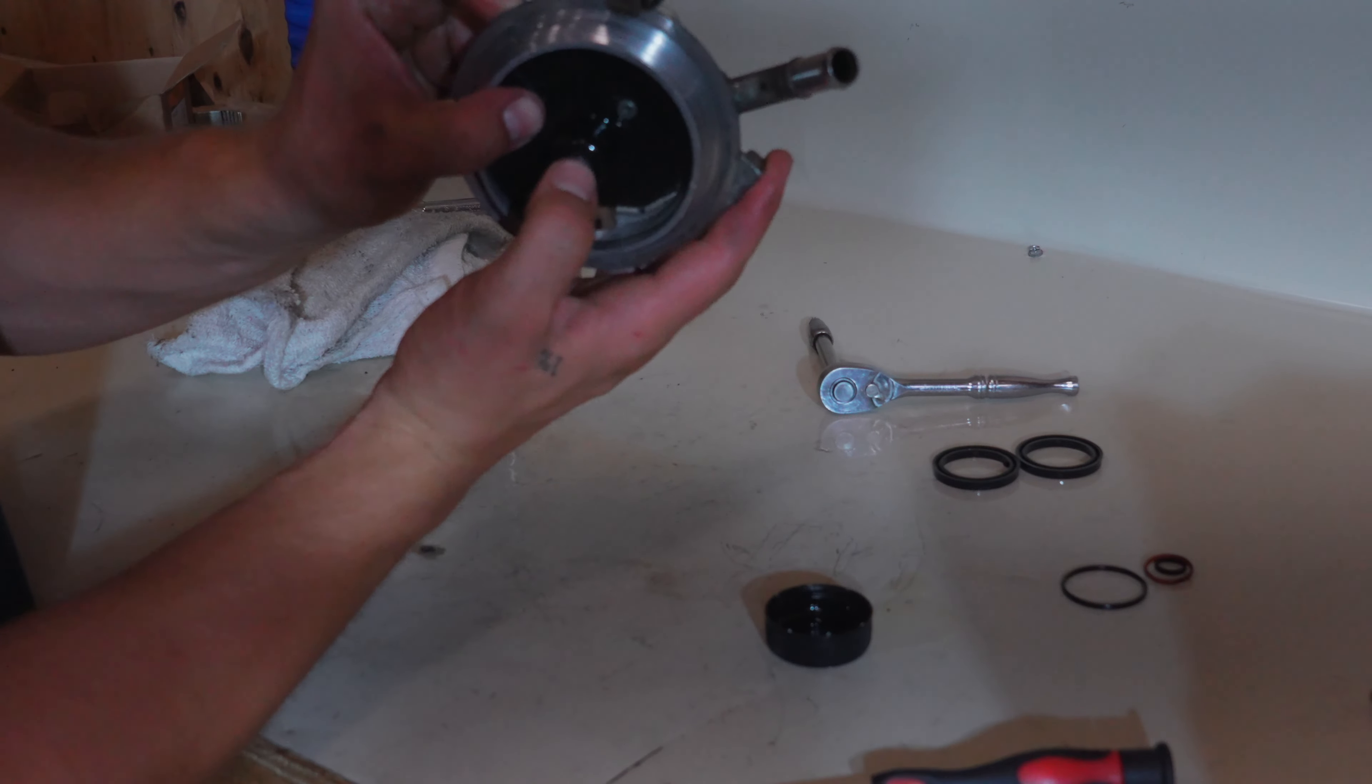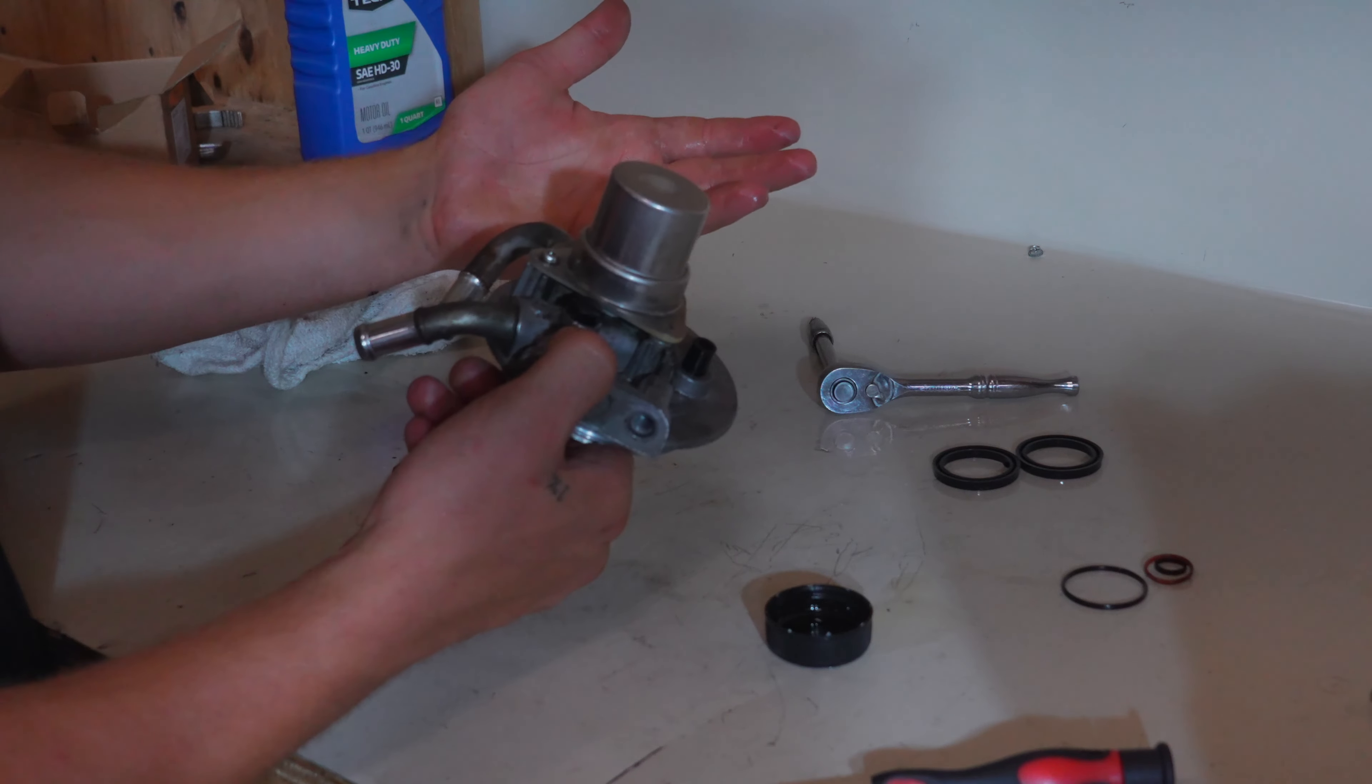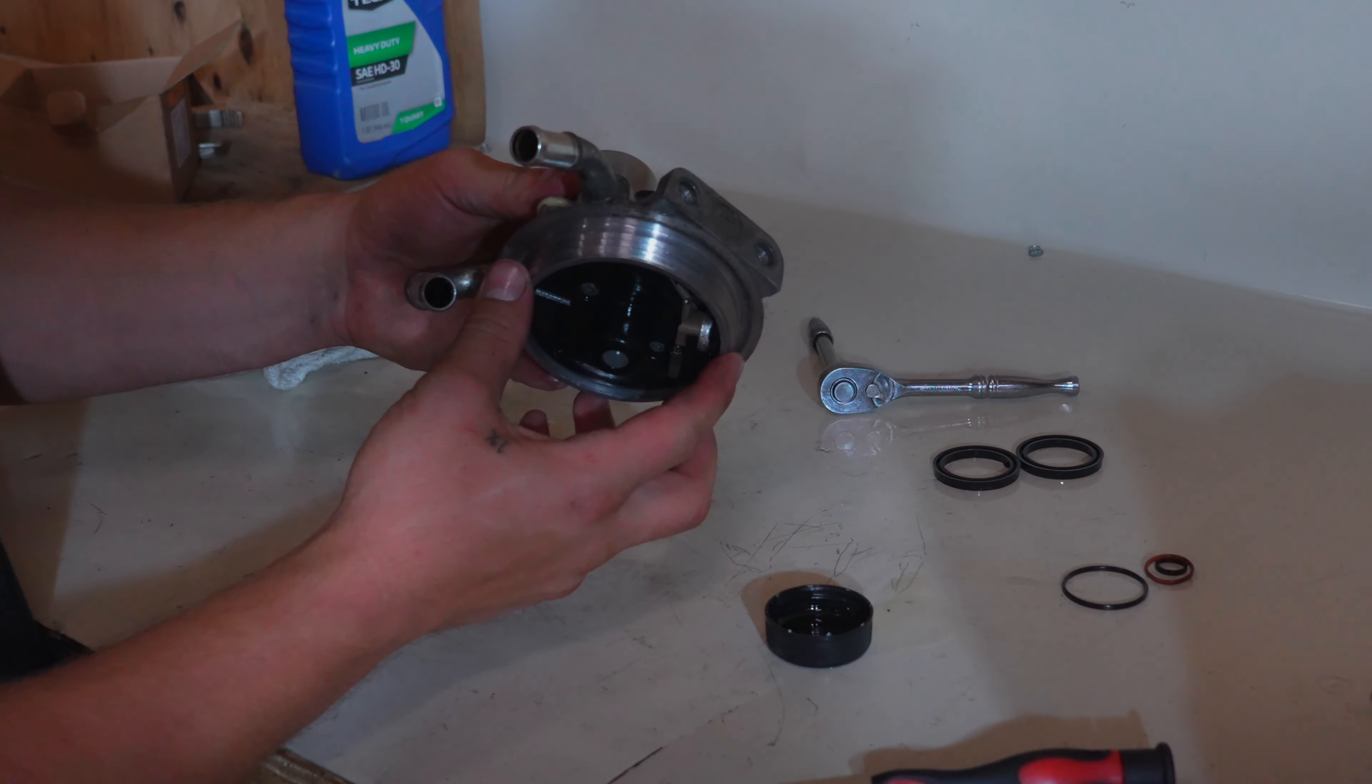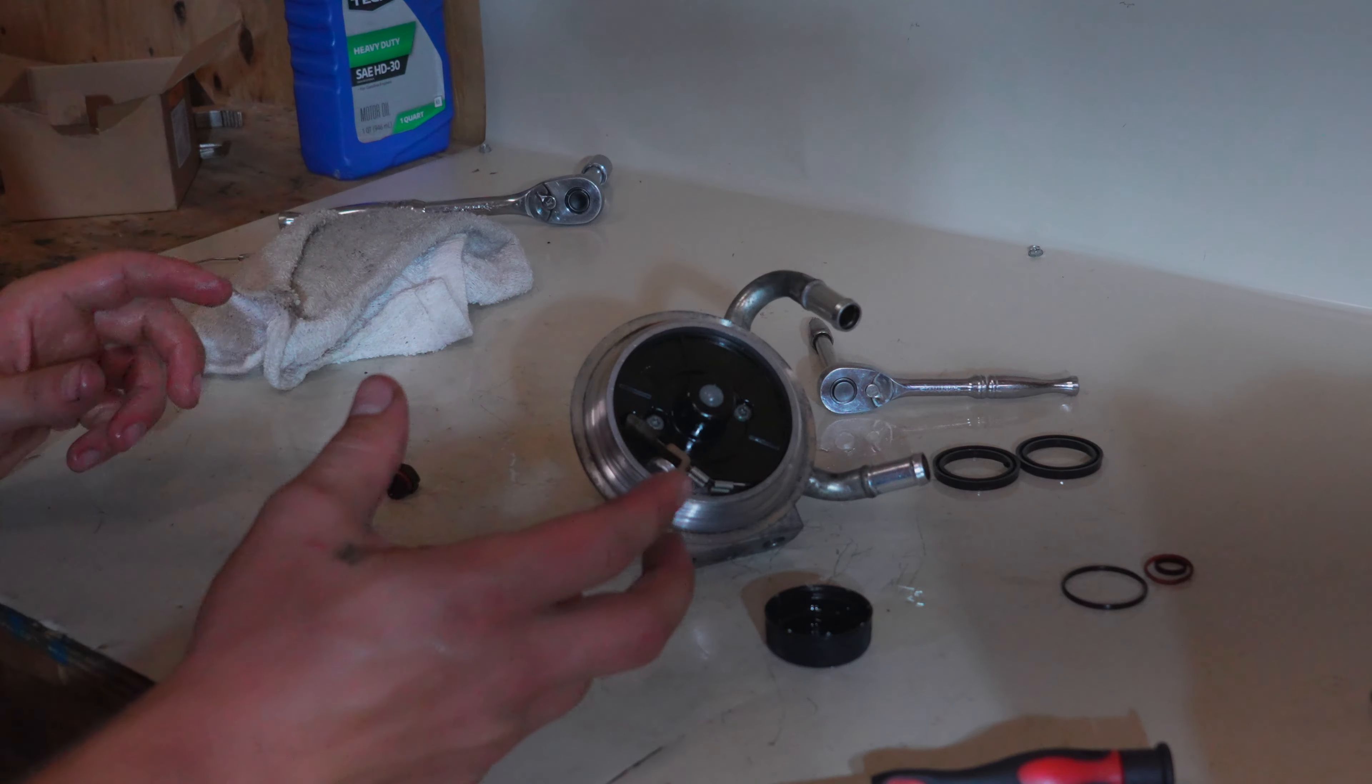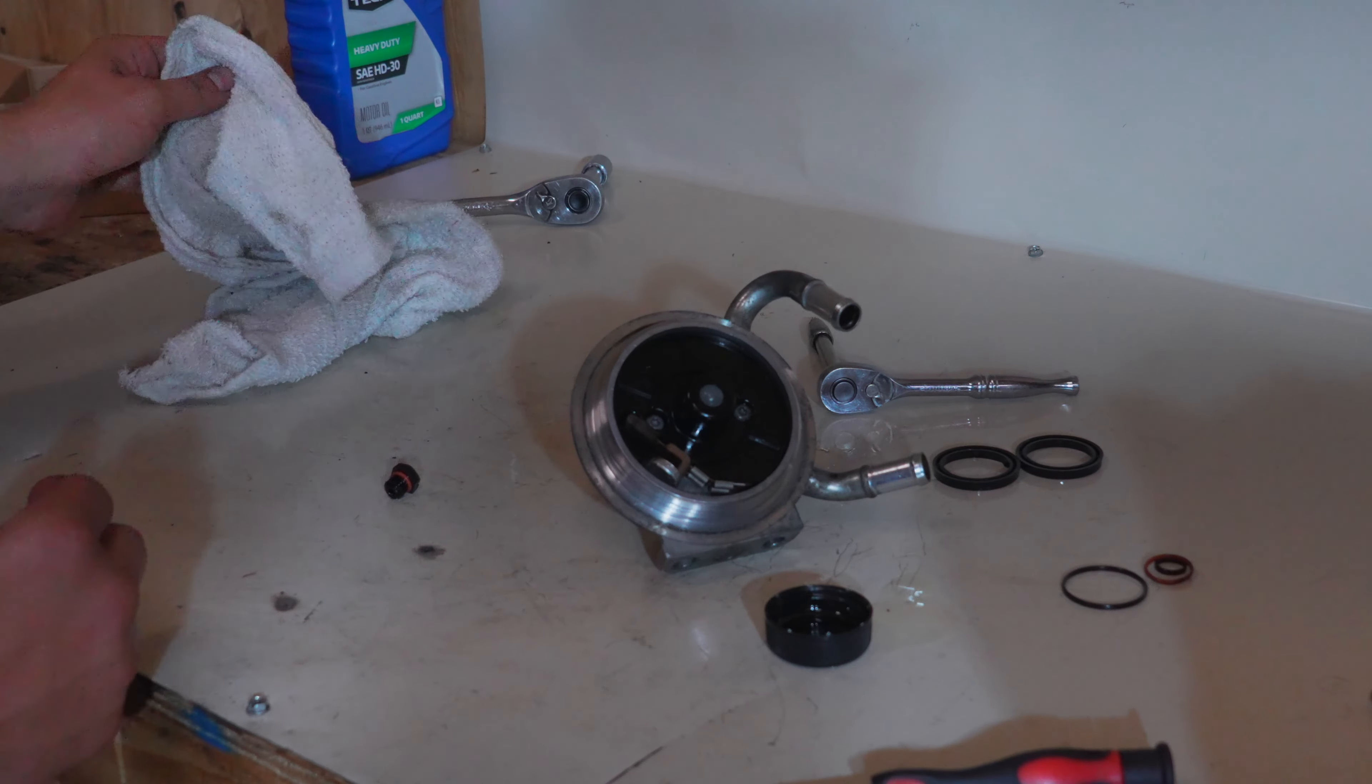All right, don't get these too tight because you don't want to strip them out. Get them snug and then go maybe another eighth to a quarter of a turn. Probably just an eighth being safe here. Make sure that your ball is still there. It's still free to move in and out. And there we go. We have our freshly rebuilt filter housing and primer pump. I'm going to go ahead and reinstall the fuel filter while it's sitting here on the bench.